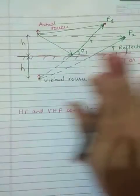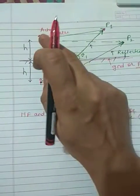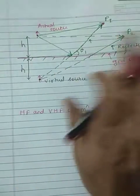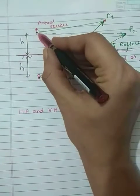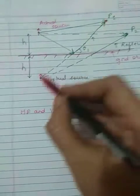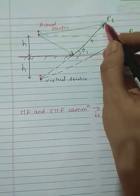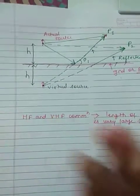Now if we remove this ground plane and consider that there are two actual sources, source 1 and source 2, then also at point P1 there will be radiations due to source 1 and radiations due to source 2 which are the same as before.